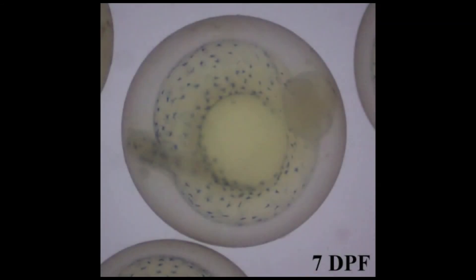Around seven days post-fertilization, the chromatophores, which look like small X's, begin to appear on the yolk sac.